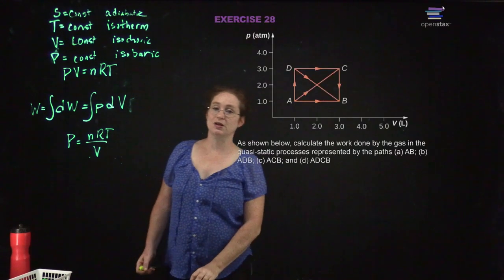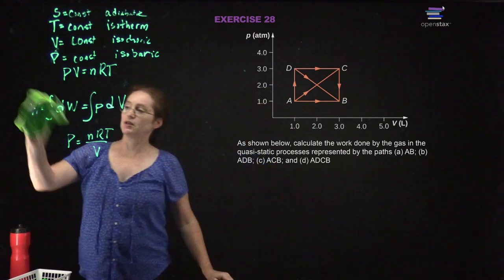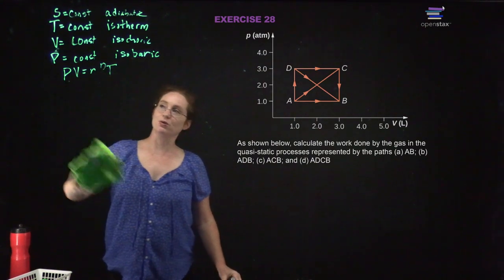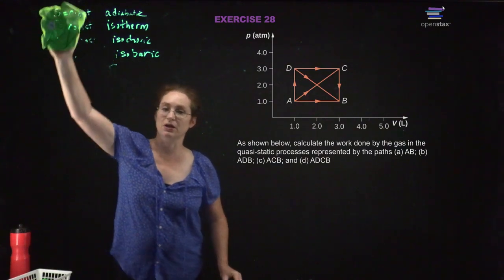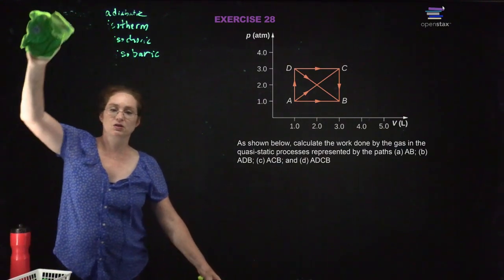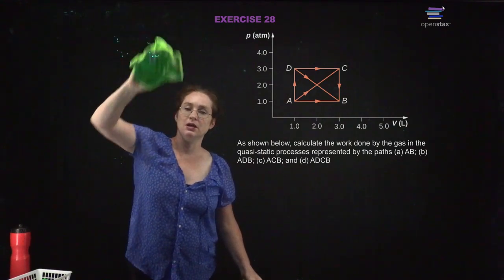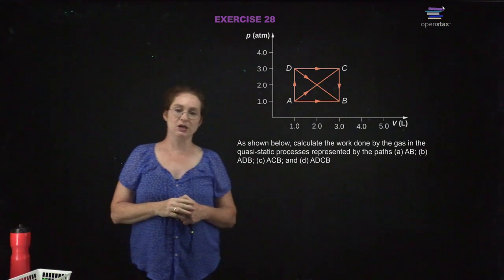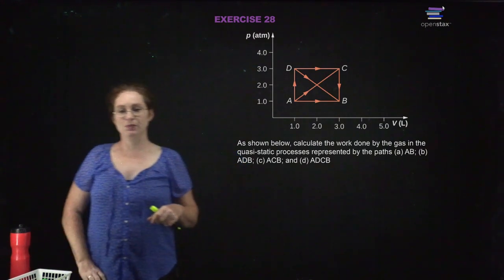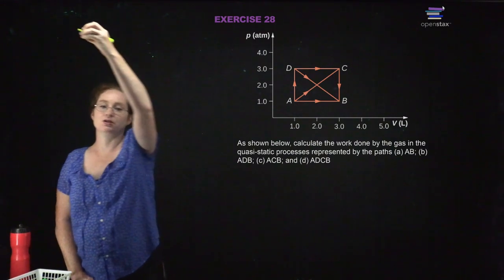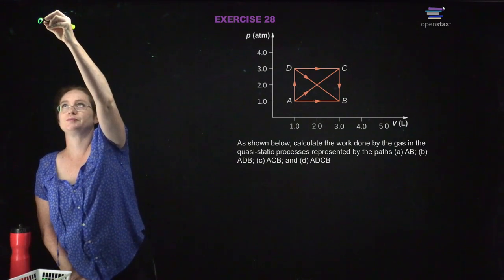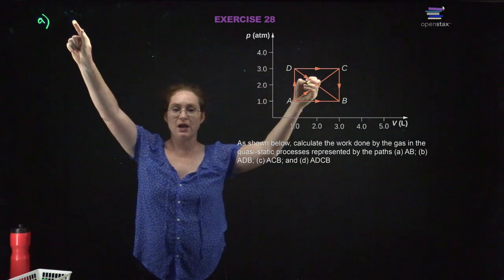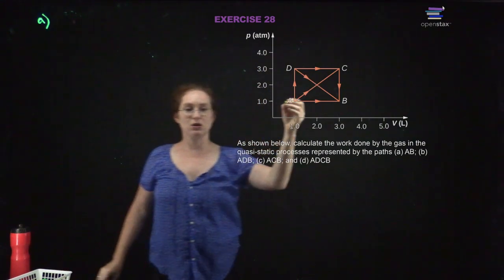Now we're going to move to some examples. There are a lot of examples in this class that you can calculate without doing integrals — remember that the work is the area underneath the curve. As shown below, calculate the work done in the quasi-static processes represented by the paths AB, ADB, ACB, and ADCB. So the work done in process A to B — I can just calculate the area under the curve.